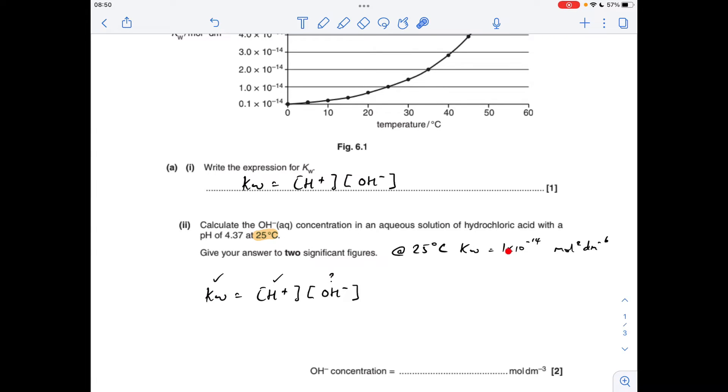So if we bring in the Kw expression, obviously we know the Kw value, that's it there. The H plus concentration is going to be 10 to the minus pH, and that'll help us get the OH minus concentration. So we just need to rearrange that, put the numbers in,